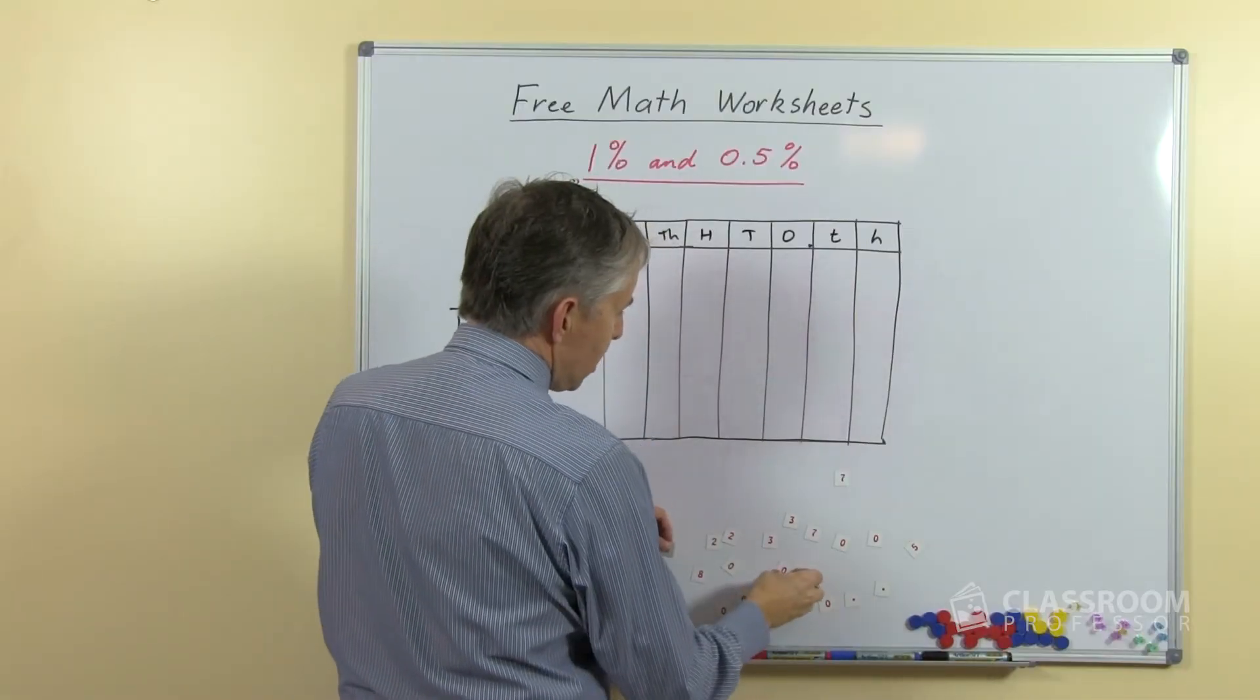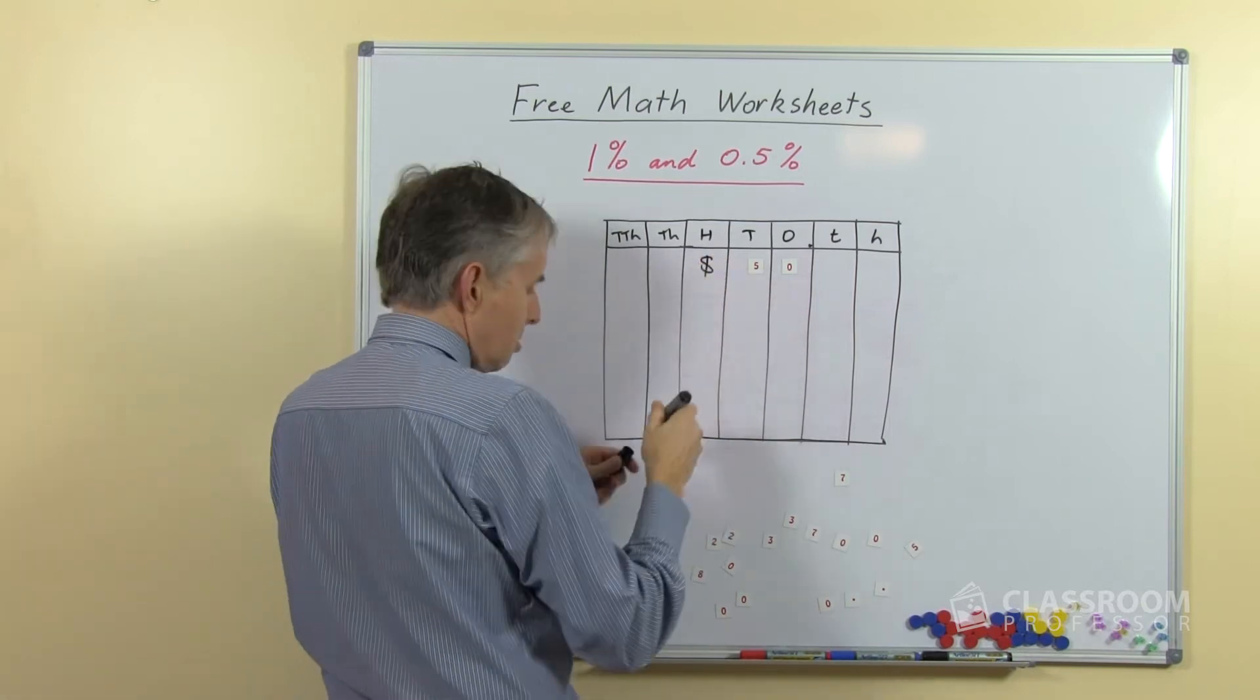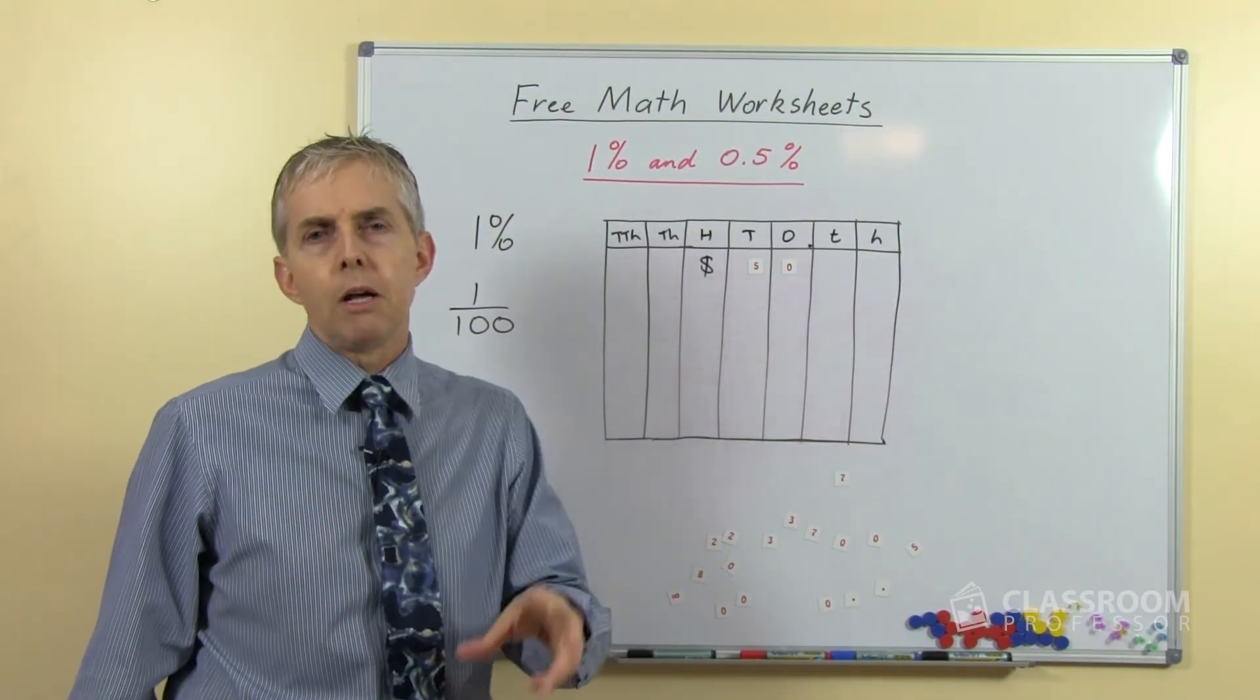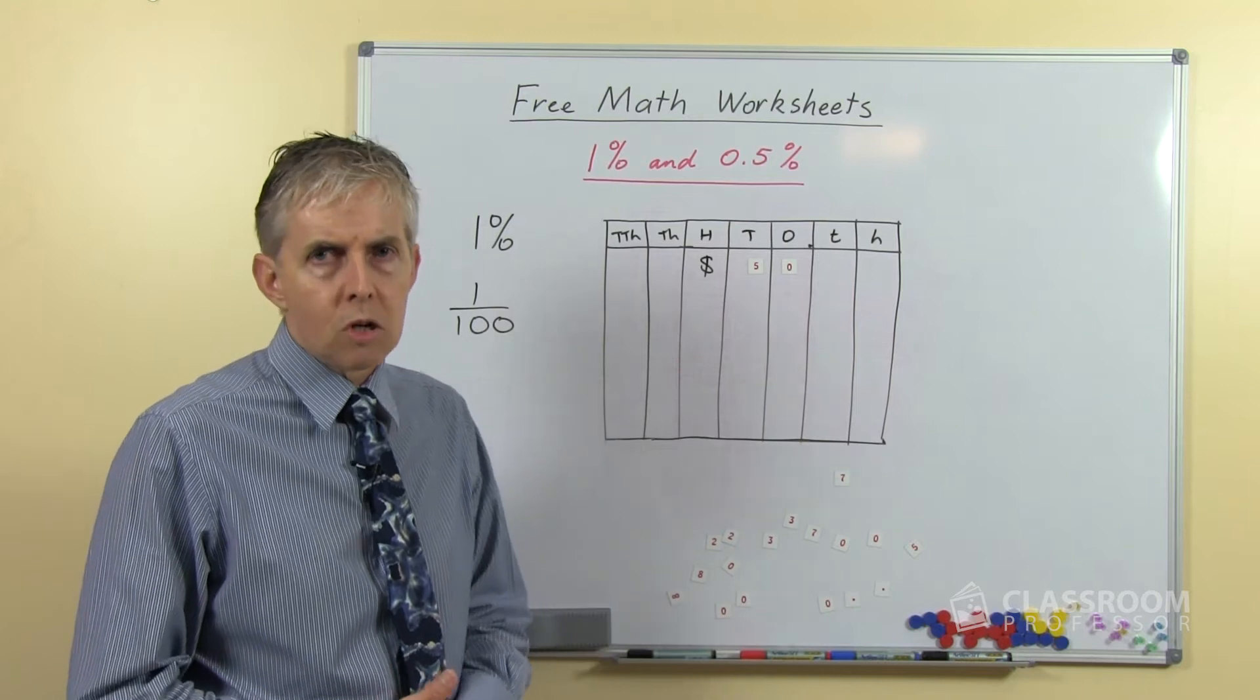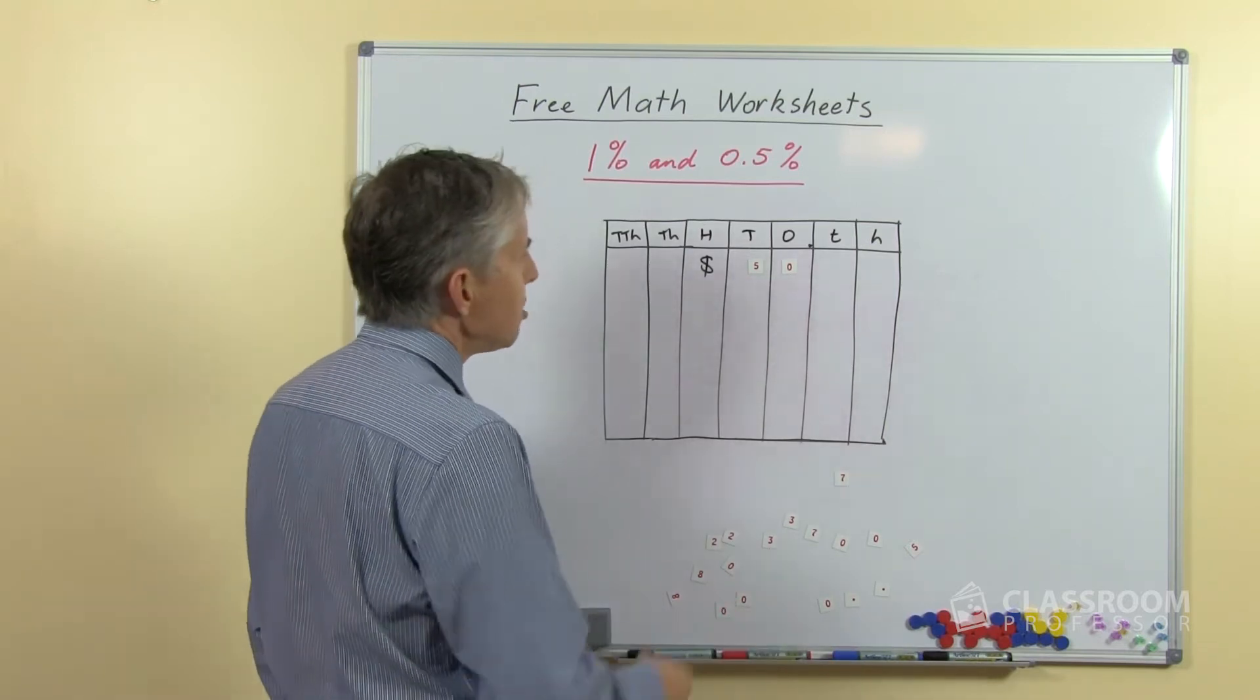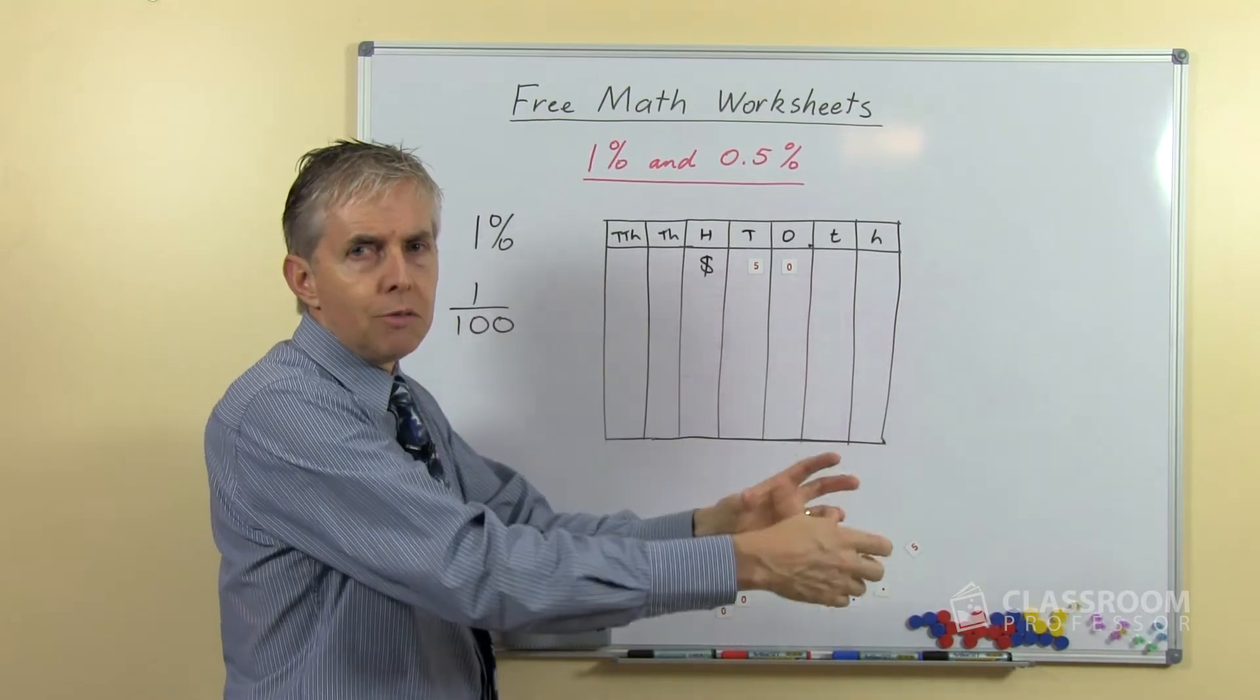So now let's start with the number fifty as a whole number and we're going to call it fifty dollars, so it's got some monetary value. What would one percent of fifty dollars be? Now I should say the reason for calling it dollars is that we often apply percentages to monetary amounts, and so it's part of the context for a lot of introductory learning about percentages. So what's going to happen to the fifty dollars if we take one percent of fifty?